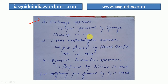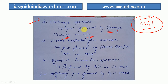The second approach is the exchange approach, put forward by George Homans in the year 1961. In this approach, Homans stresses on the way people control another person's behavior by exchanging various forms of rewards and punishments for approved as well as disapproved behavior.